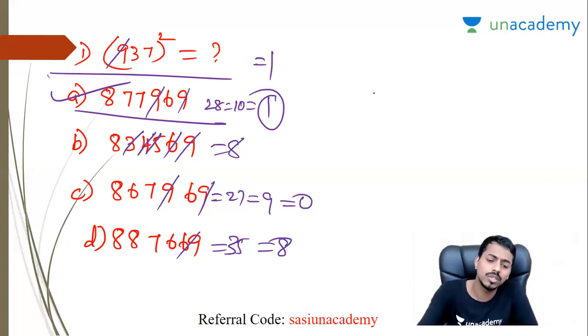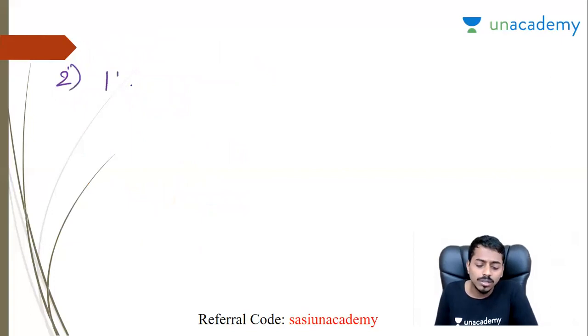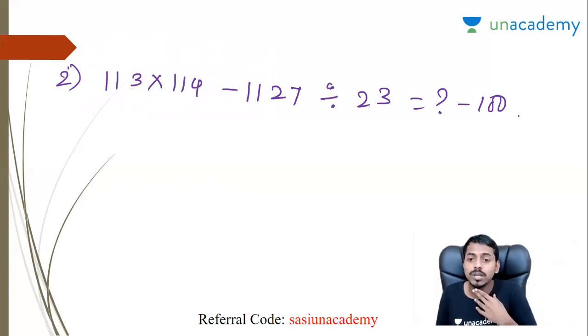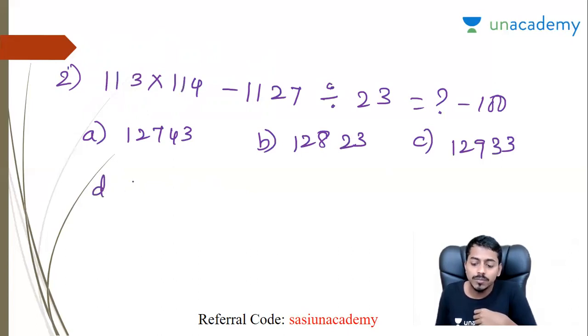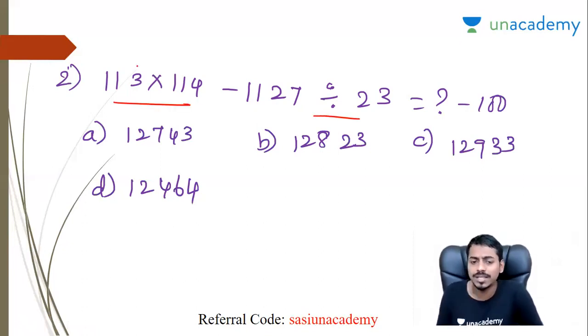Next question: 113 into 114 minus 1127 divided by 23 equal to N minus 100. A equal to 1274, B equal to 12823, C equal to 129 double 3, and option D 12464.